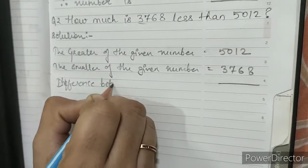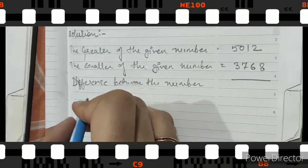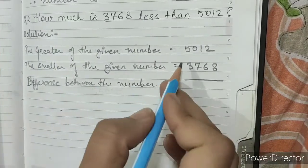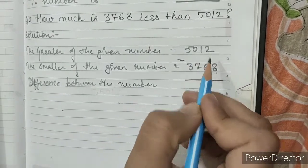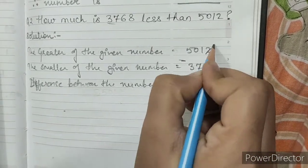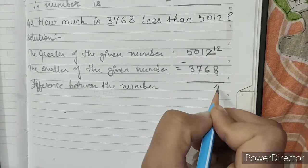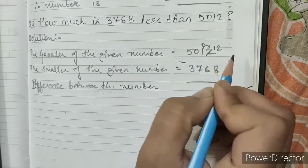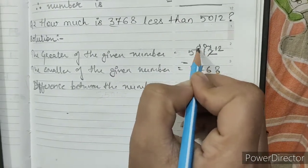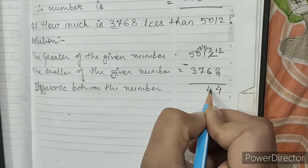Difference between the number is 5012 minus 3768. So, 2 minus 8, it is not possible. We will make it 12. 12 minus 8 is 4. We borrowed from here. It will become 10. 10 minus 6 is 4.